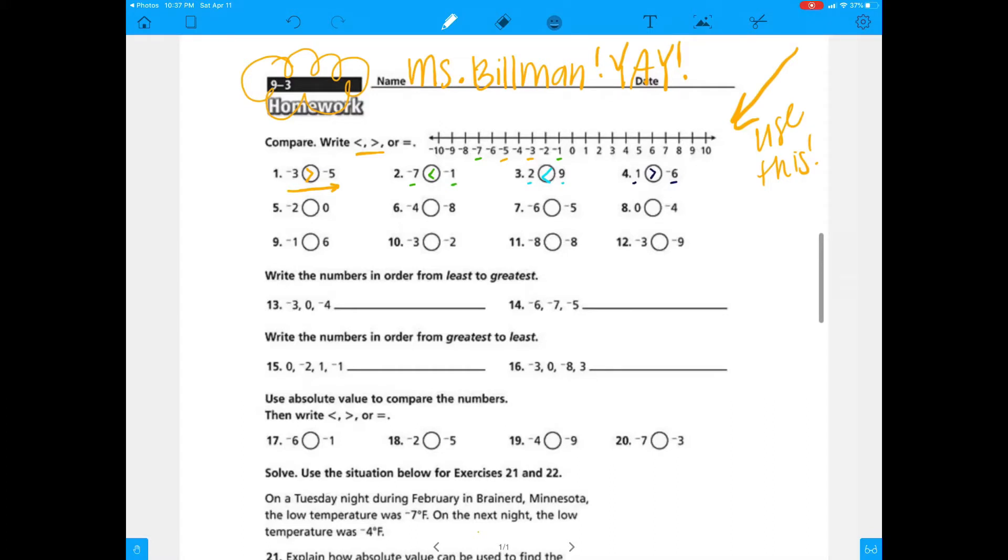Number 3 is 2 is less than 9. Number 4, 1 is greater than negative 6. This right there is a perfect example that 1 is to the right of origin. 1 is to the right of 0. Negative 6 is to the left. It's actually farther and farther from it. So 1 happens to be greater.